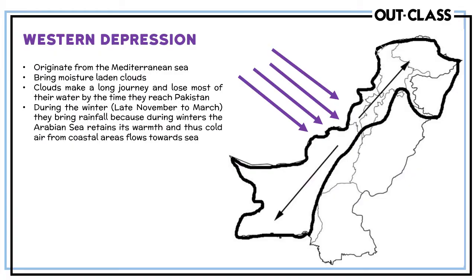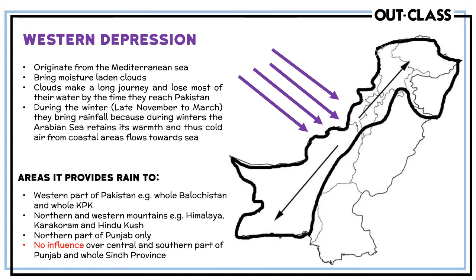The second form of winds and rainfall we experience is called western depressions. These are generated or originate from the Mediterranean Sea and bring a lot of moisture with them, coming through the Mediterranean Sea as well as through the Caspian. They have a long journey, and by the time they enter Pakistan they are very heavily laden, and the moment they come across these mountains they start to produce rainfall. These come in the later parts of winter.